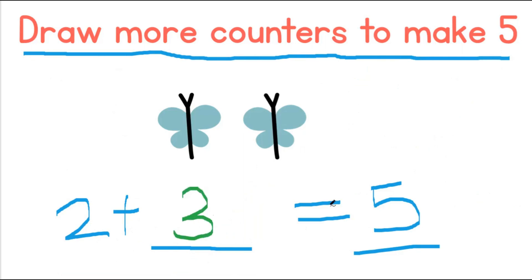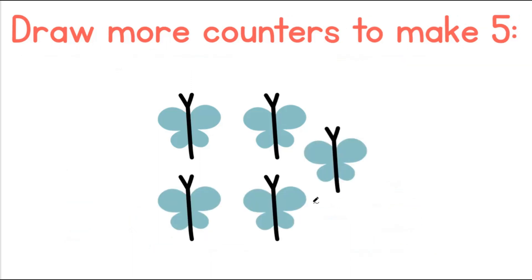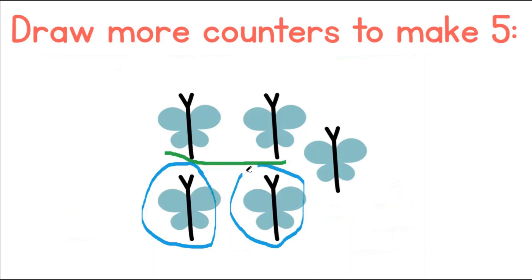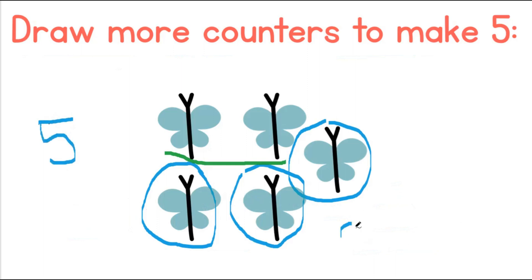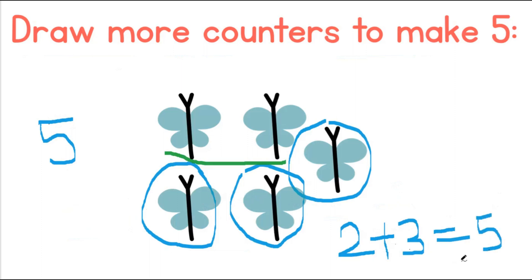2 plus 3 gives us 5. We added 2, and now we added 3: 1, 2, 3, which gives us 5. This means that 2 plus 3 equals 5. 2 added to 3 makes 5.